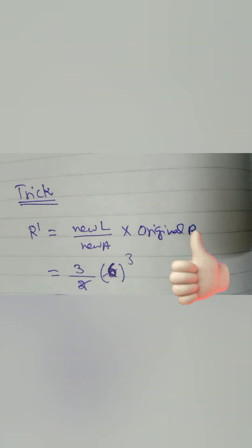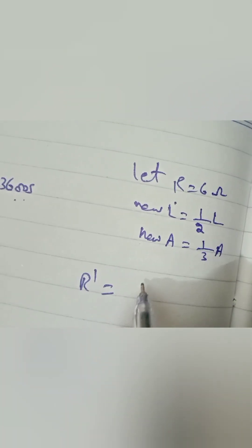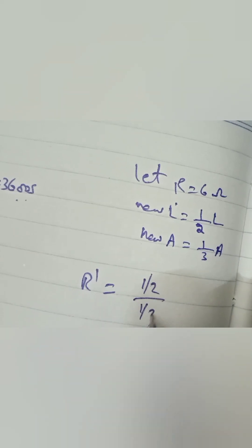Now let's take another example and solve it through the trick. Our new length is now half the original length and area is one-third the original area. So let's solve it through the trick. Just write (1/2)/(1/3) × 6.